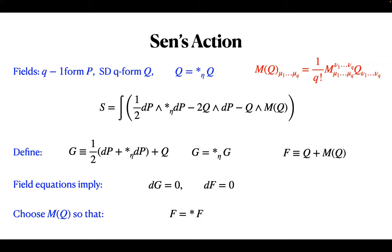Because G and F are closed, it is implied locally that there are potentials—so G = dC and F = dA. Another strange thing is that if one looks at the Hamiltonian analysis, as Sen did, one finds that G has negative energy and F has positive energy. It's as if G appears in the action with the wrong sign. It's just as well that G doesn't couple to the physical metric and decouples from the other fields, otherwise there would be an issue.